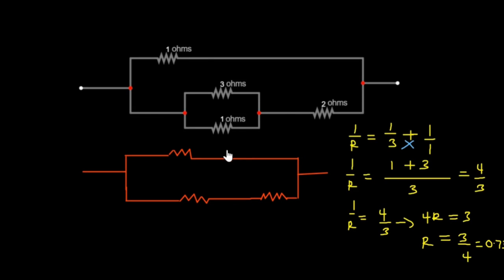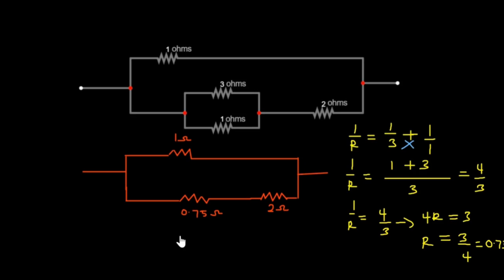I'll draw the circuit. I still have my 1 ohm resistor and my 2 ohms resistor, but the 3 ohms and 1 ohm parallel pair has been simplified to 0.75 ohms. You can see clearly that the 0.75 ohms and the 2 ohms are now in a series connection. Summing them gives 2.75 ohms. So R sub S equals 0.75 plus 2 ohms, which gives 2.75 ohms. We represent those two resistances with a single resistor of 2.75 ohms.